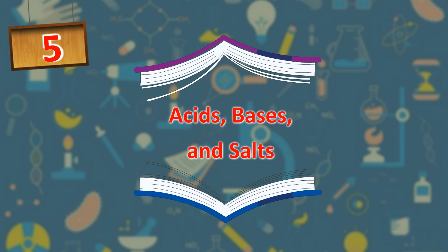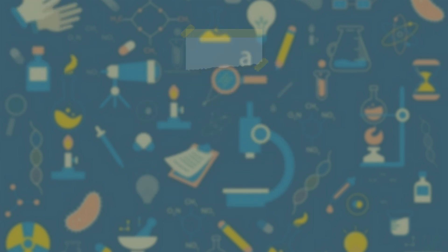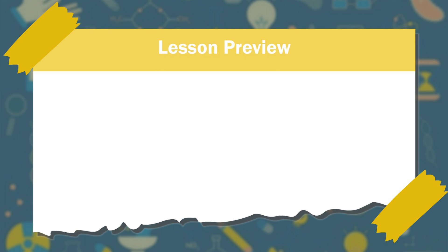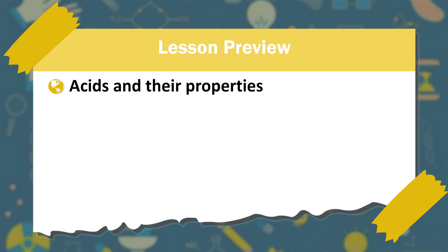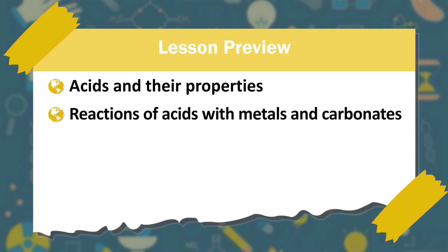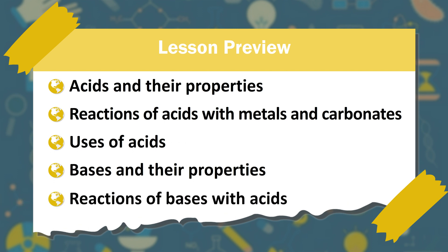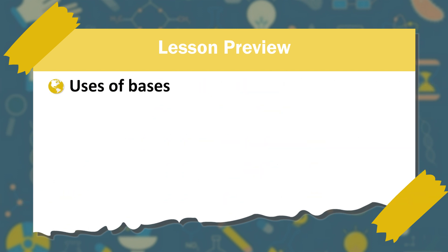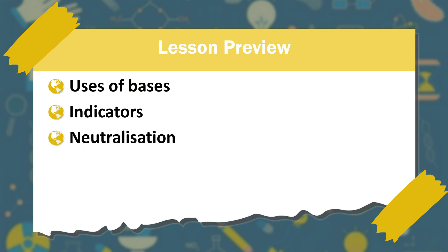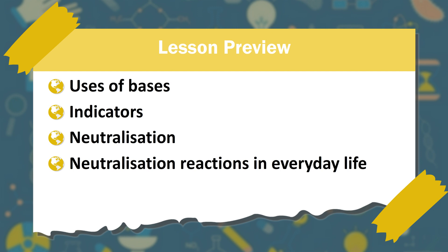Chapter 5: Acids, Bases and Salts. Lesson preview: acids and their properties, reactions of acids with metals and carbonates, uses of acids, bases and their properties, reactions of bases with acids, uses of bases, indicators, neutralization, neutralization reactions in everyday life, salts and their properties, uses of salts.